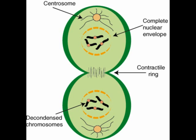In animal cells, a cleavage furrow — which is an indentation of the membrane between the two daughter nuclei — begins as anaphase draws to a close. The cleavage furrow deepens when a band of actin filaments called a contractile ring slowly forms a circular constriction between the two daughter cells. The action of the contractile ring can be likened to pulling a drawstring ever tighter about the middle of a balloon, constricting it in the middle. A narrow bridge between the two cells can be seen during telophase, and then the contractile ring continues to separate the cytoplasm until there are two independent daughter cells.